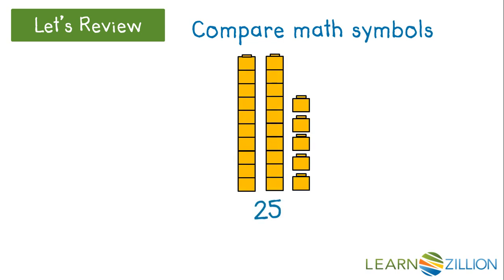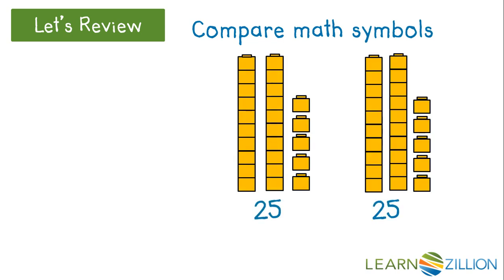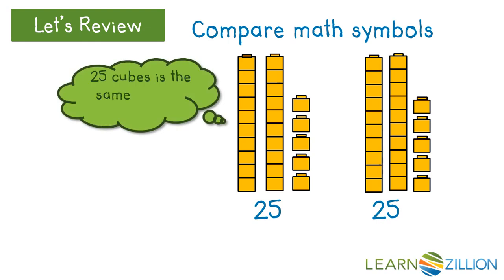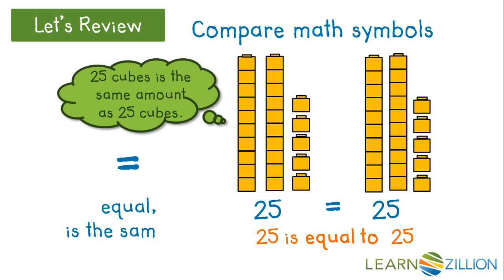Here we have 25 cubes, and here we have another set of 25 cubes. 25 cubes is the same amount as 25 cubes. They are equal. This is the symbol we use for equal or the same as.